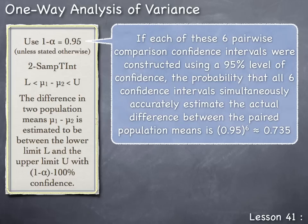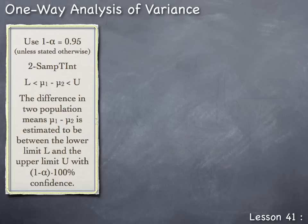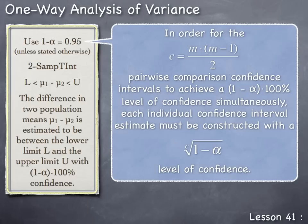This overall simultaneous confidence level of 0.735 is not large enough for our statistical results. Therefore, in order for the C = m(m − 1)/2 pairwise comparison confidence intervals to achieve a (1 − α) × 100% simultaneous level of confidence, each individual confidence interval must be constructed with a C-th root of (1 − α) level of confidence. This ensures that the overall simultaneous confidence level will be (1 − α).